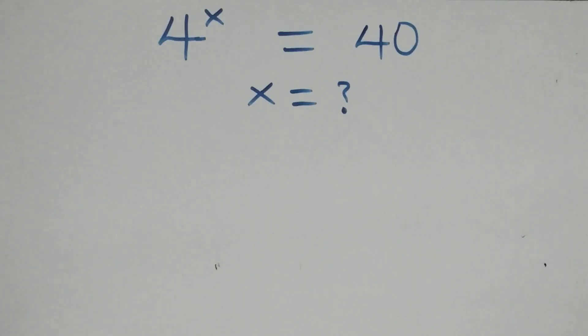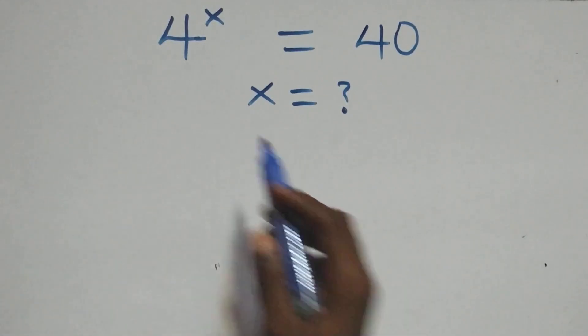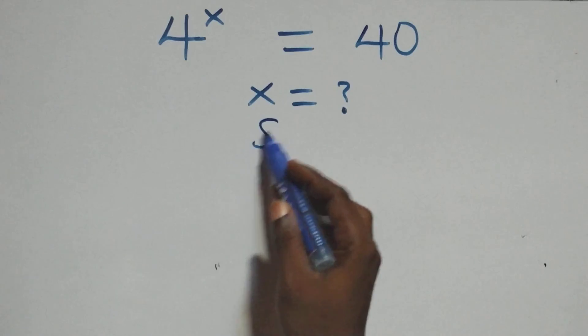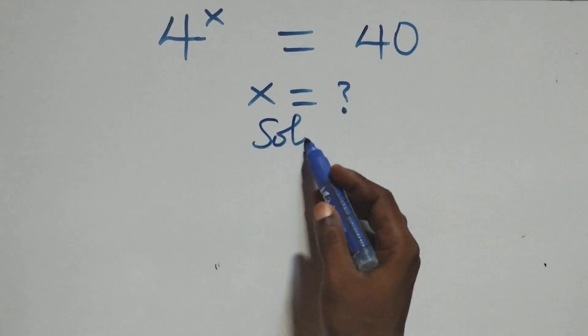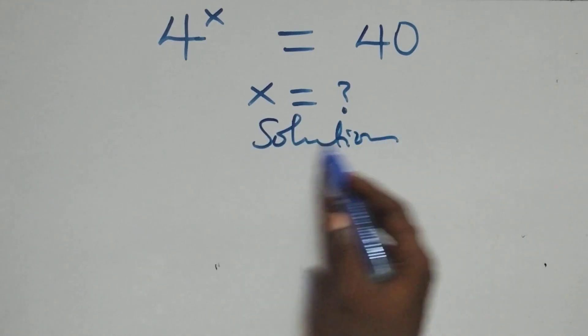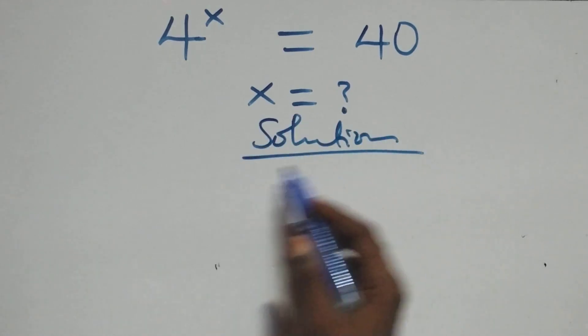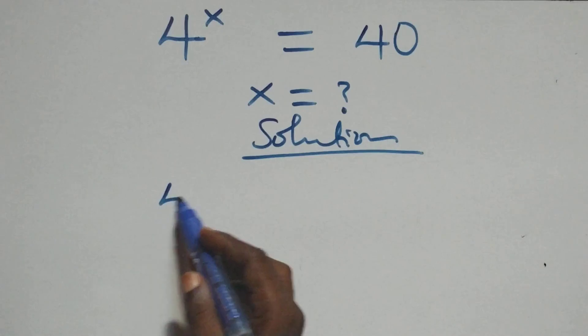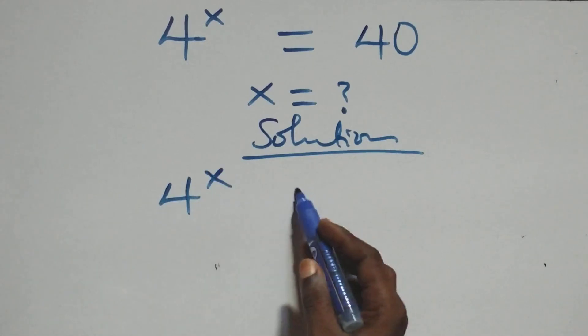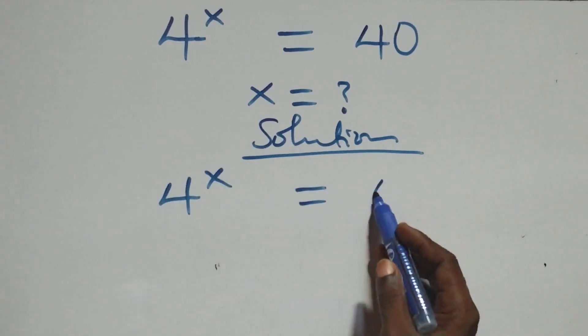Hello, you're welcome. We're going to solve this nice exponential equation. What we have here is four raised to the power x equals forty.